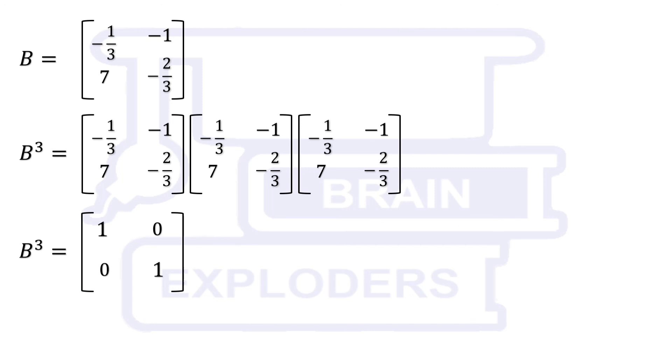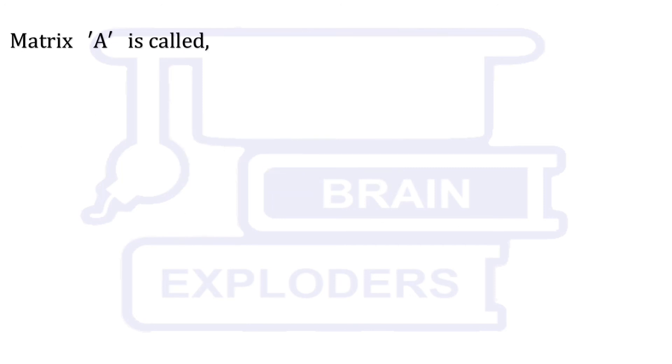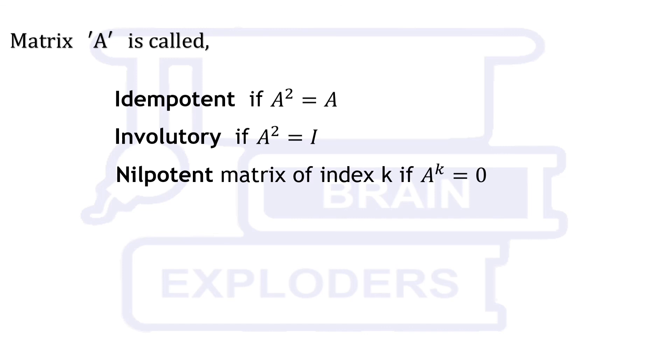If A² is equal to A, then the matrix is known as idempotent. If A² is equal to I, then the matrix is involuntary, and kth power of a nilpotent matrix of index k is a null matrix.